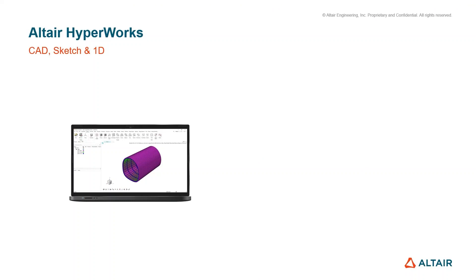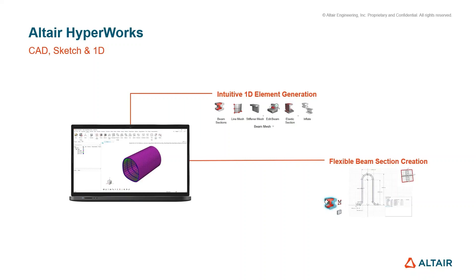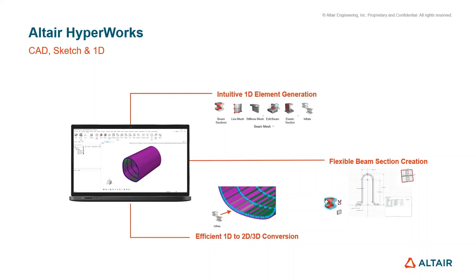For the second half of the session we're going to focus on Sketch and 1D. With 1D we'll look at intuitive 1D element generation, where tools are all clustered in a single ribbon for ease of access — covering beam sections, creating elements, editing for orientation and alignment, and inflating elements from 1D to 2D or 3D. We'll also focus on beam sections and their flexibility: using standard sections from the built-in library in Hyperworks, or creating custom sections using the sketch tool. Finally, we can inflate these 1D elements efficiently into 2D or 3D to increase the fidelity of your FE model.